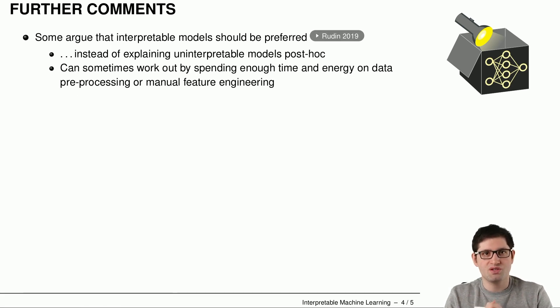So there are some researchers that argue that interpretable models should be preferred in the first place, which I would agree. This is usually the first step you should look at and then gradually improve the model instead of having a complex model and then explaining it afterwards, which is inconvenient. It can work out to prefer or use in the first place interpretable models. But you sometimes have to spend a lot of time and energy by pre-processing the data or maybe also manually construct some features like manual feature engineering.